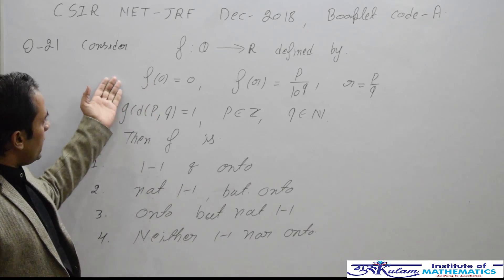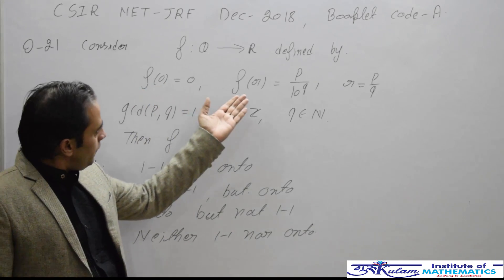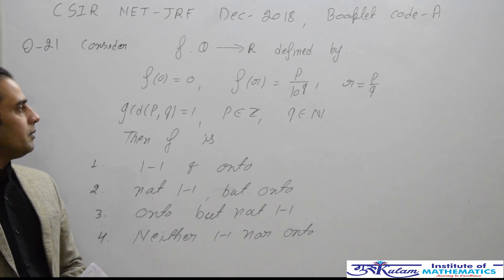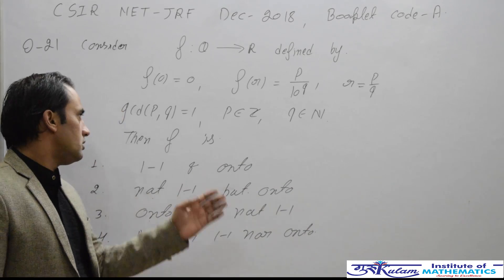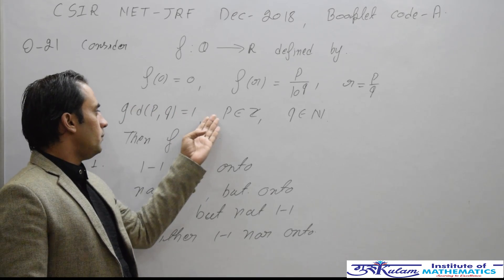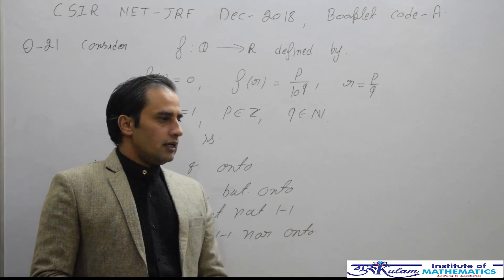The function is defined such that f(0) = 0 and f(r) = t/|q|^t, where r = t/q is a rational number with t as an integer and q as a natural number.